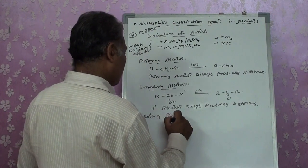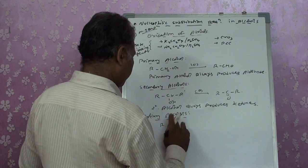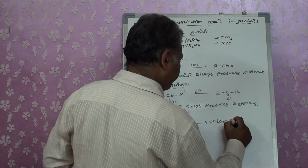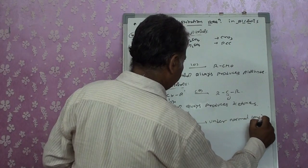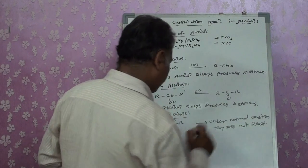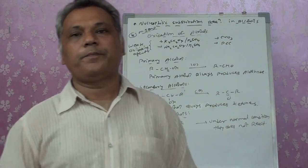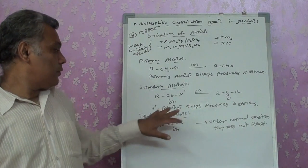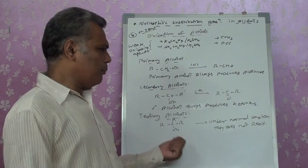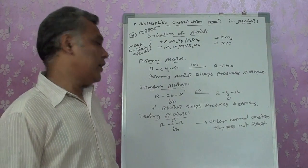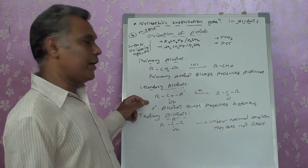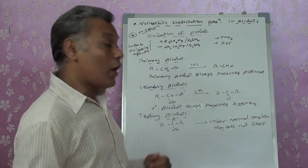Secondary alcohol on oxidation always produces a ketone. Tertiary alcohol under normal conditions does not react with these weak oxidizing agents — under vigorous conditions some oxidation may occur but our textbook states tertiary alcohol does not undergo the oxidation reaction. So: primary → aldehyde, secondary → ketone, tertiary → no reaction.